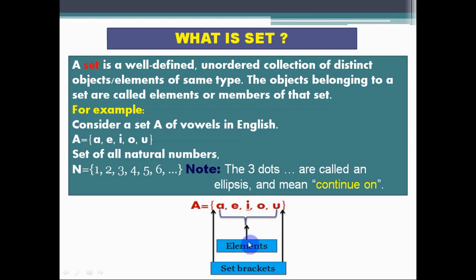And the brackets are known as set brackets. Let's take another example. Set of all natural numbers, capital N equals to {1, 2, 3, 4, 5, 6, ...}. Here the three dots are called ellipsis, it means continue on. Here we have infinite numbers of elements so we can show this by three dots.